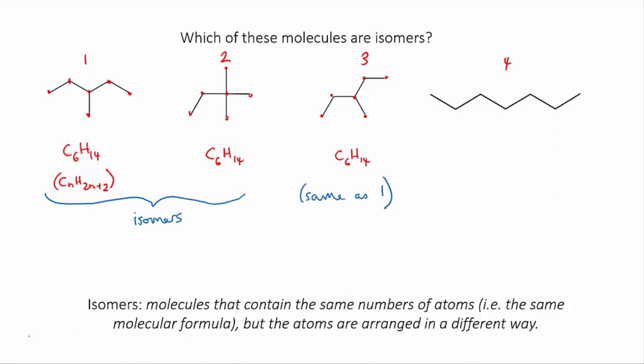Lastly, looking at number four, if we count up the carbons: one, two, three, four, five, six, seven. C7, it's an alkane, so the number of hydrogens is two times seven plus two, which is 16. It clearly can't be an isomer because it has a different number of carbons. So it's just a different molecule.